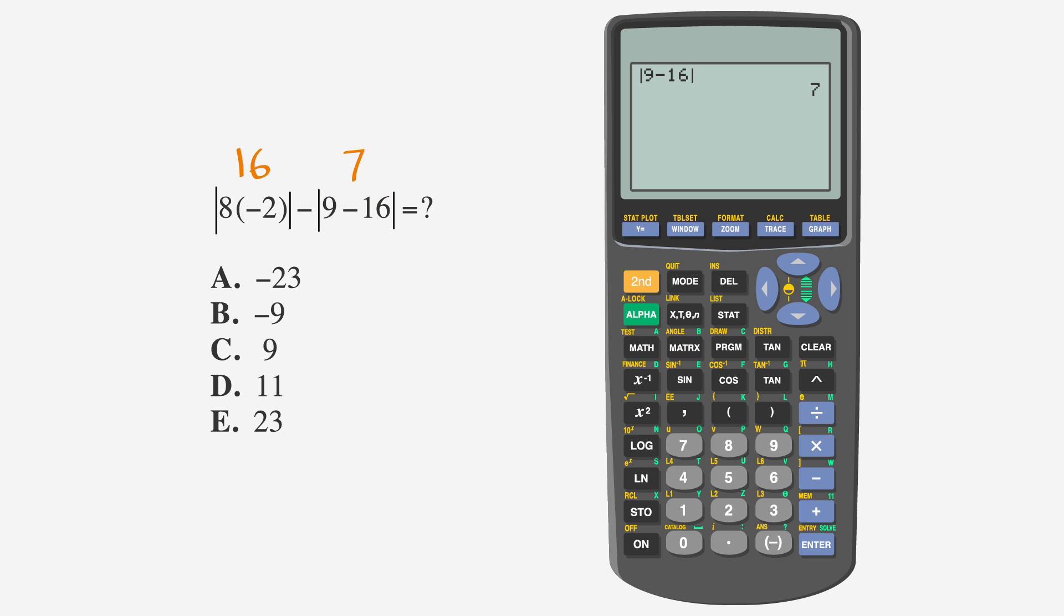Now, let's calculate 16 minus 7. This one's pretty easy. 1, 6, minus 7 enter. We get 9. So, the answer is 9. Choice C.